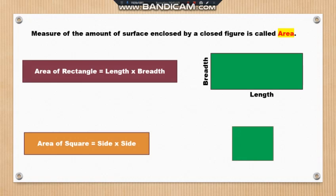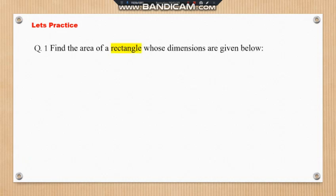Side multiplied by side. All four sides are equal, so any one side value is given. You have to substitute the value in the formula and find out the area of the square. Let's practice on these two shapes — area of rectangle and area of square. Question number one: find the area of a rectangle whose dimensions are given.